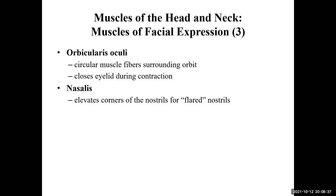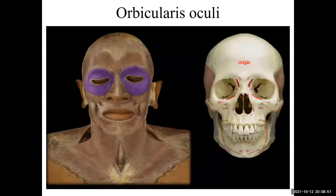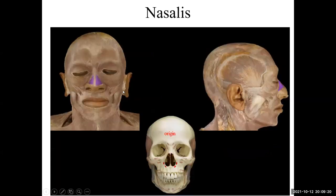Nasalis — nasal means nose — so this muscle is named after its location around the nostrils. When you contract this muscle, you'll flare your nostrils out. Here you can see orbicularis oculi surrounding each eye — when contracted, orbicularis muscles make the diameter of the opening smaller, so you squint. And nasalis sits right on the bridge of your nose; contracting it causes flaring of the nostrils.